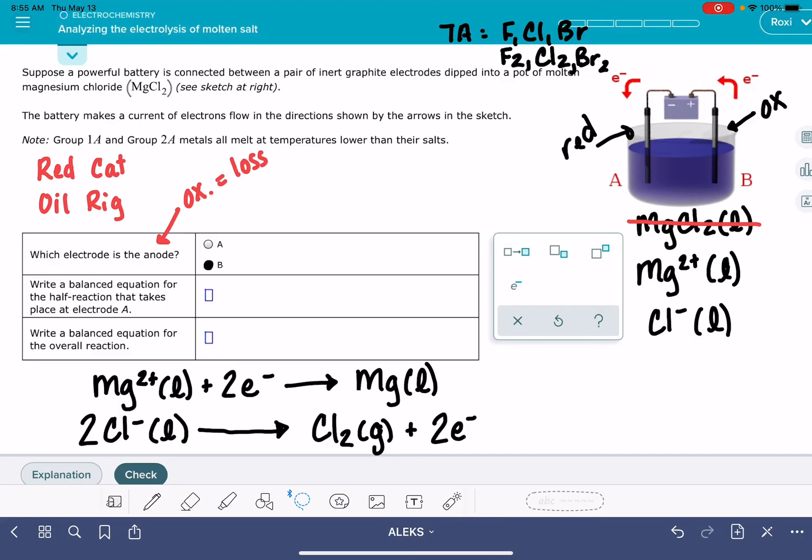So of these two reactions, which one is taking place at electrode A? Electrode A is the site of reduction, and reduction is the gain of electrons. So that's this Mg2+ liquid plus two electrons makes Mg liquid.